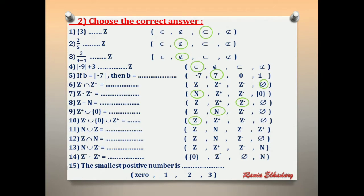Number 11: N union Z. The union sign gives us the greatest set. The greatest between N and Z is Z. The answer is Z.